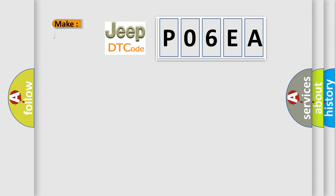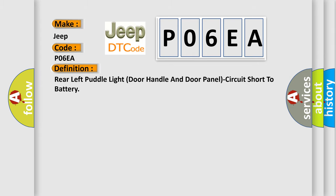So, what does the diagnostic trouble code P06EA interpret specifically for Jeep car manufacturers? The basic definition is: Rear left puddle light door handle and door panel circuit short to battery.